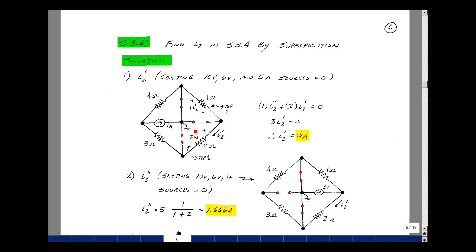I2 was the mesh current in this mesh, and we'll call that I2 due to the first source, second source, third source, and fourth source. Now we had two voltage sources and a current source. I'm going to set the voltage sources equal to zero by shorting them, and the 5 amp current source that was here I'll set equal to zero by making it an open circuit.